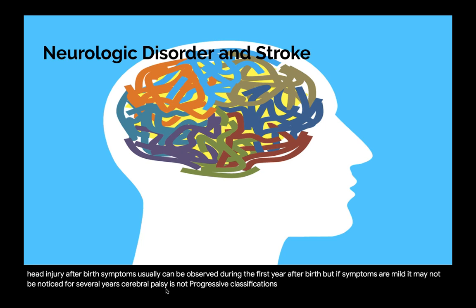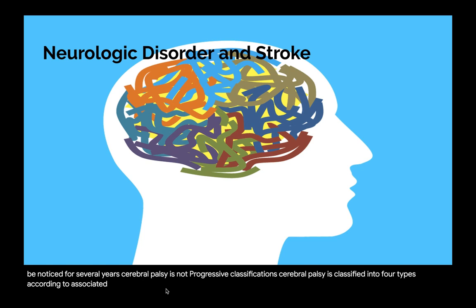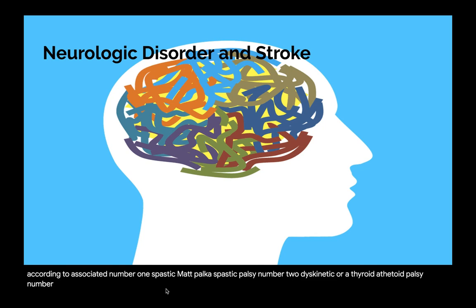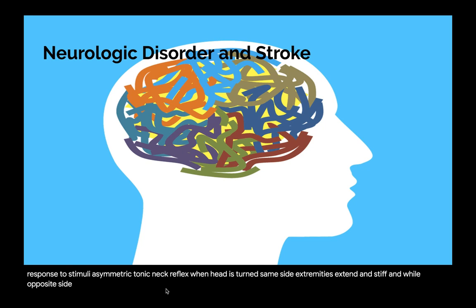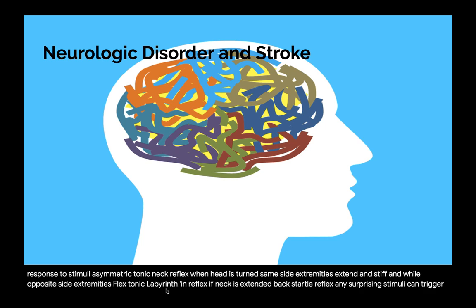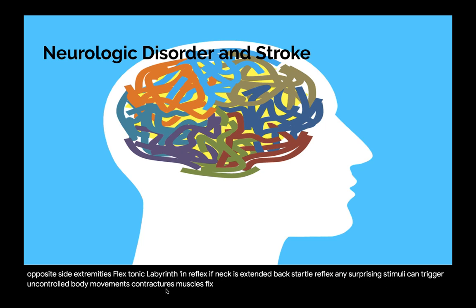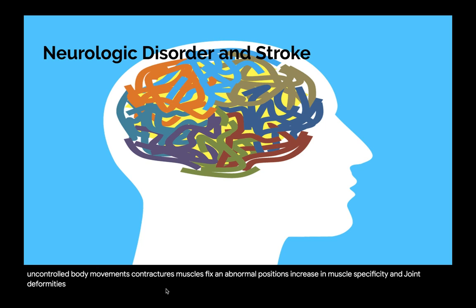Cerebral palsy is classified into four types according to associated motor impairments: spastic palsy, dyskinetic or athetoid palsy, ataxic palsy, and combined palsy. Accompanying conditions include primitive reflexes — such as asymmetric tonic neck reflex (when head is turned, same-side extremities extend and stiffen while opposite side extremities flex), tonic labyrinthine reflex (if neck is extended back, extremities also extend), and startle reflex (any surprising stimuli can trigger uncontrolled body movements). Contractures involve muscles fixed in abnormal positions with increased muscle spasticity and joint deformities. Seizures occur in as many as half of those with cerebral palsy.